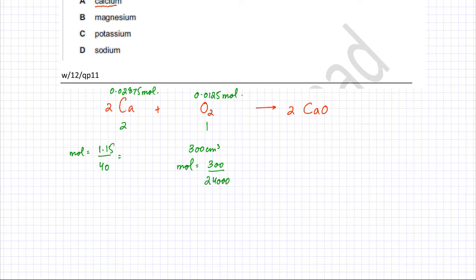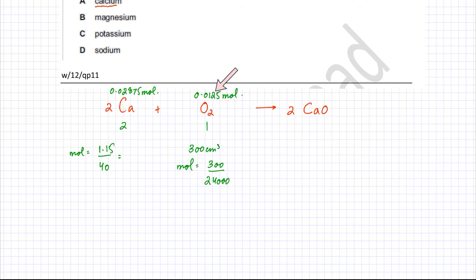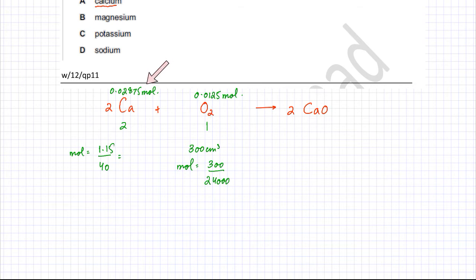Looking at the moles — 0.0125 for oxygen and 0.02875 for calcium — if calcium were correct, the ratio should be 2:1. But doubling 0.0125 does not give 0.02875, so the ratio does not fit. The moles from the question data do not match the equation ratio, meaning calcium cannot be the answer. Option A is incorrect.